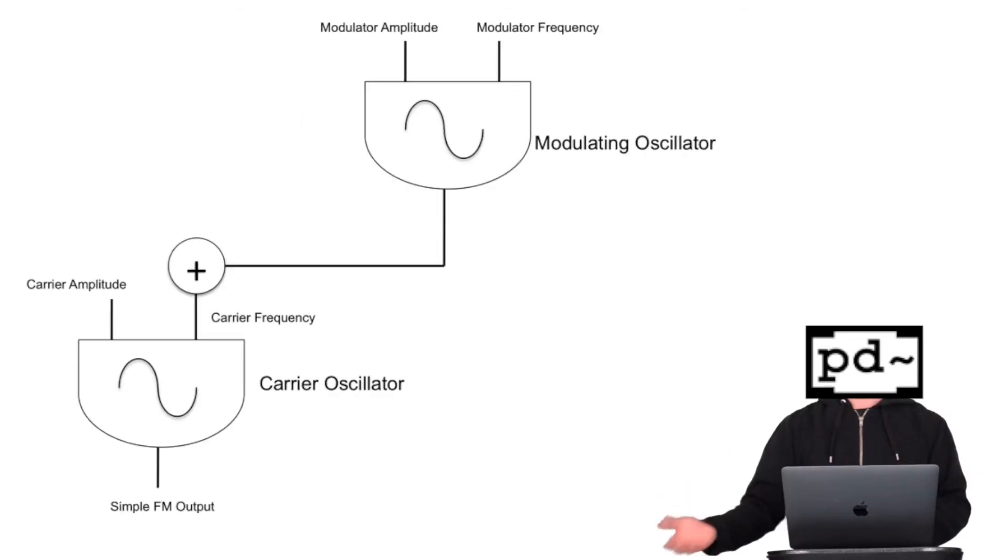Okay, now we'll move on to FM Synth. Let's create our carrier frequency. So make a number object and create one oscillator. Next, let's create the modulator frequency. And we should include times tilde so that we can control how much it affects the carrier frequency.